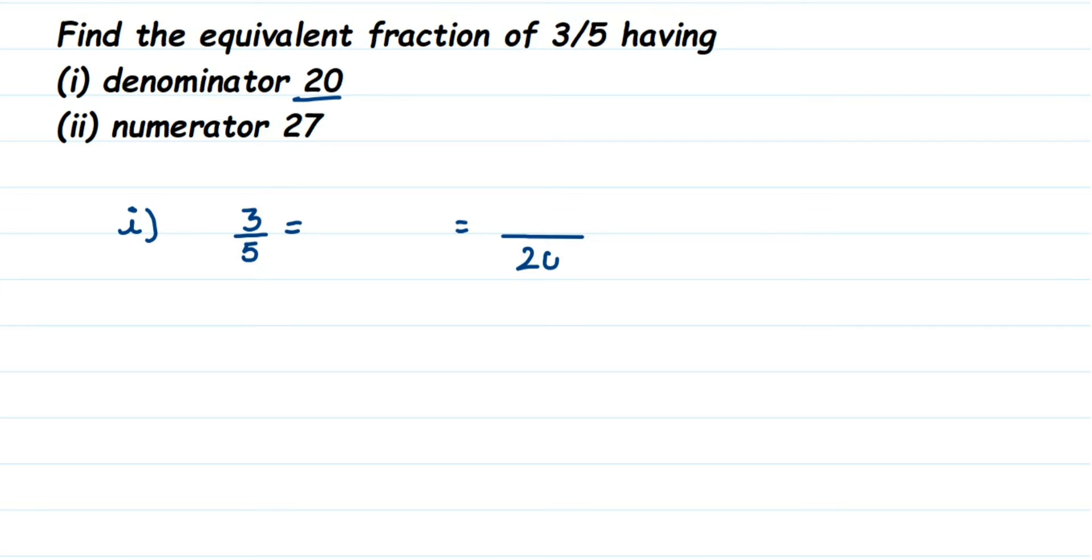So there are two ways: multiplication and division. If you divide 5 by a number, I will not get 20, which means I am multiplying here. So with 5, what should I multiply to get 20? So 5 times 4 is 20, right.